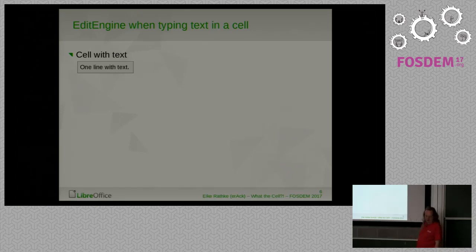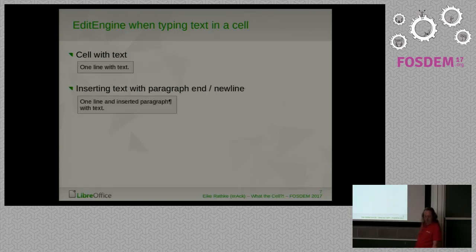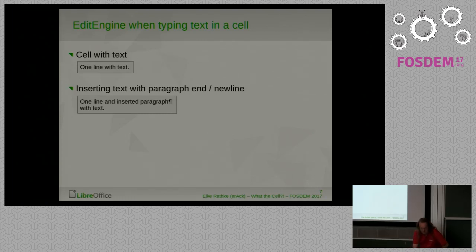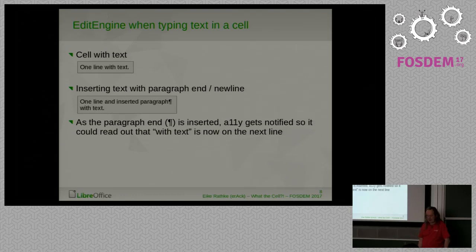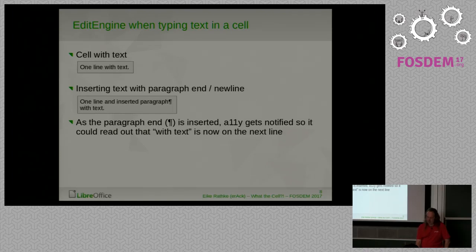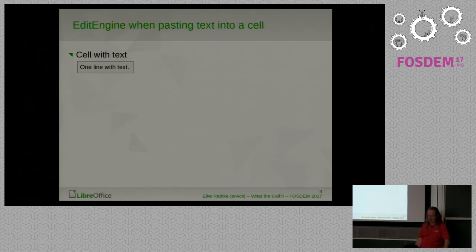For example, we have an edit engine with a cell containing one line of text. We start to edit and type some text. When we insert a paragraph — with a paragraph mark at the end — as soon as you reach the paragraph end and press Enter, accessibility is notified that there's a new paragraph, so it can read the new content and tell the screen reader the text has moved to the next line.